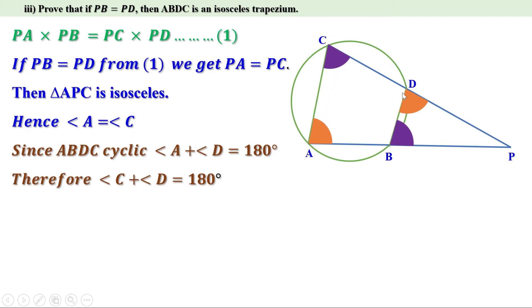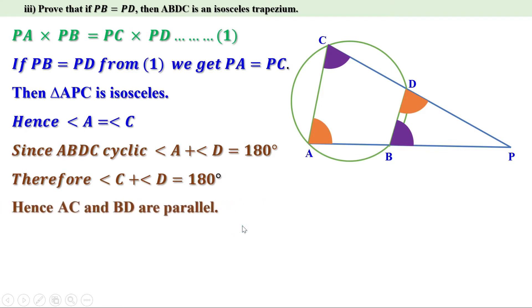That means the sum of these two angles is 180 degrees. These are a pair of co-interior angles formed when the sides AC and BD are intersected by the line CD. They are supplementary, which means these two lines AC and BD are parallel. So we can say AC and BD are parallel. In quadrilateral ABDC, one pair of opposite sides are parallel, so it is a trapezium.